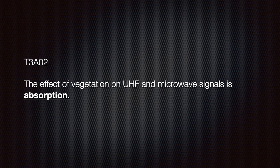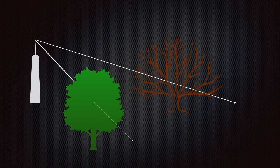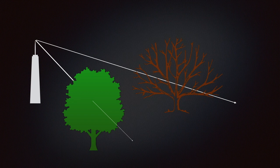We should know that the effect of vegetation on UHF and microwave signals is absorption. Vegetation has leaves filled with chlorophyll. Chlorophyll absorbs light more strongly in the blue and red portions of the electromagnetic spectrum, especially down at the infrared, but it also absorbs UHF waves and higher. The effect of this absorption on radio waves is called attenuation — a reduction of energy or force.